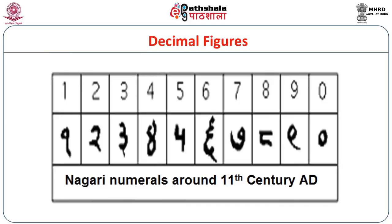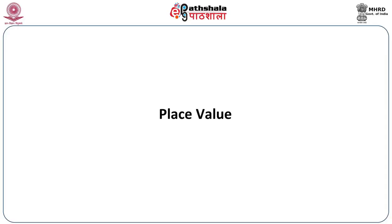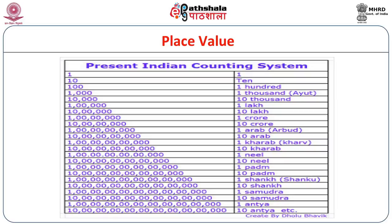Coming to the decimal figures, there are 9 figures — 1, 2, 3, 4, 5, 6, 7, 8, 9 — and a circle denoting 0, making 10 symbols in total. These figures are used as Nagari numerals around the 11th century CE. It is a place value system where 1 is a unit, 10 is expressed by 1 and 0, 100 by 1 and two zeros, 1000 by 1 and three zeros, and so on for any number by adding zeros.